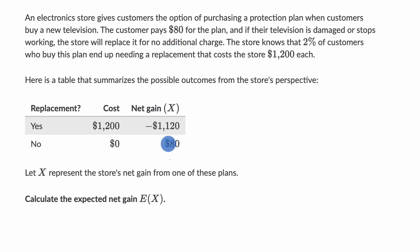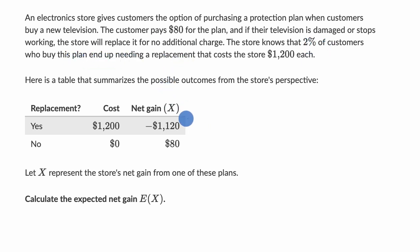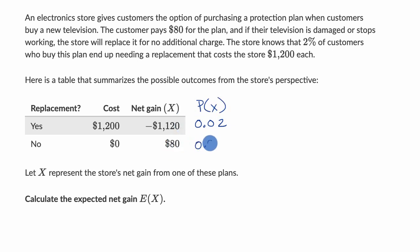To figure out the expected net gain, we just have to figure out the probabilities of each of these outcomes and take the weighted average of them. The probability that they will have to replace the TV — we know 2% of customers who buy this plan end up needing a replacement — so that's 0.02. The probability of not needing a replacement is 0.98.